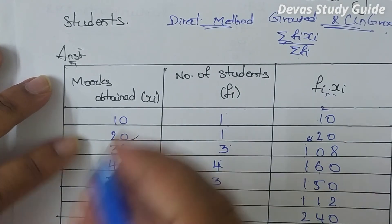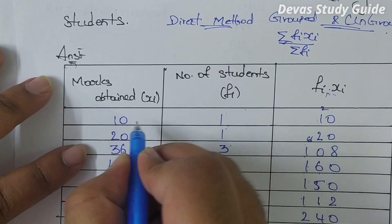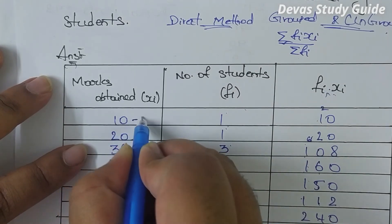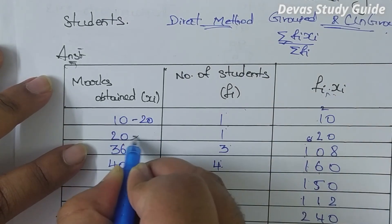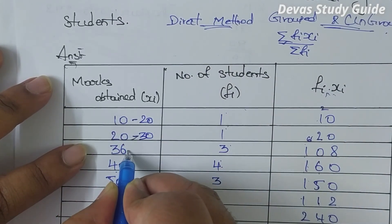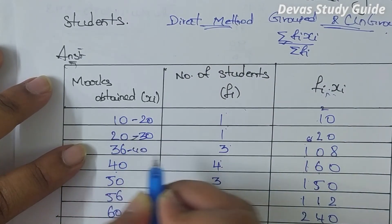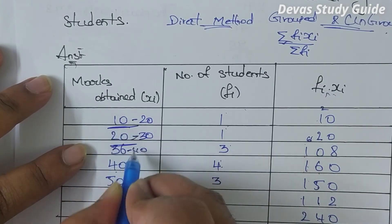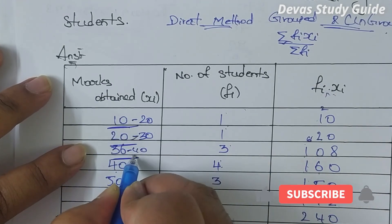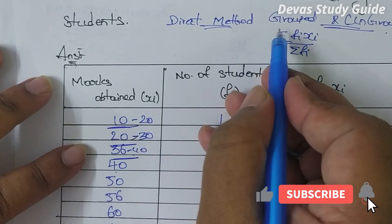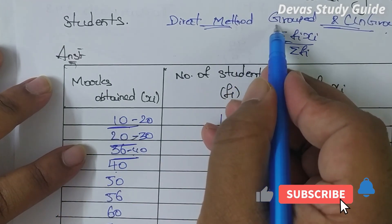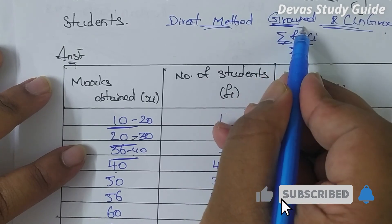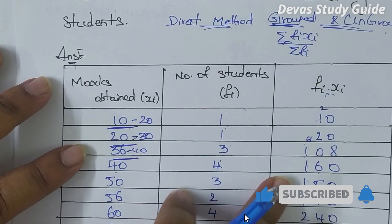If you have grouped data, you can use this grouped data method. This is the example shown here.